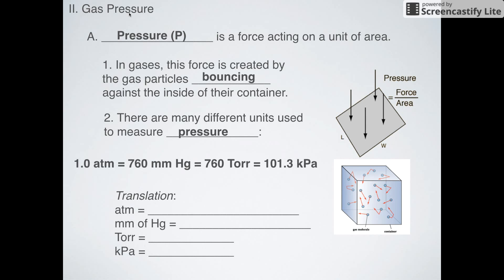Here gives us all of the major conversions that we would ever need to convert between our units of pressure. We've got one atmosphere or 760 millimeters of mercury or 760 Torr or 101.3 kilopascals. Those are all very common units of pressure.